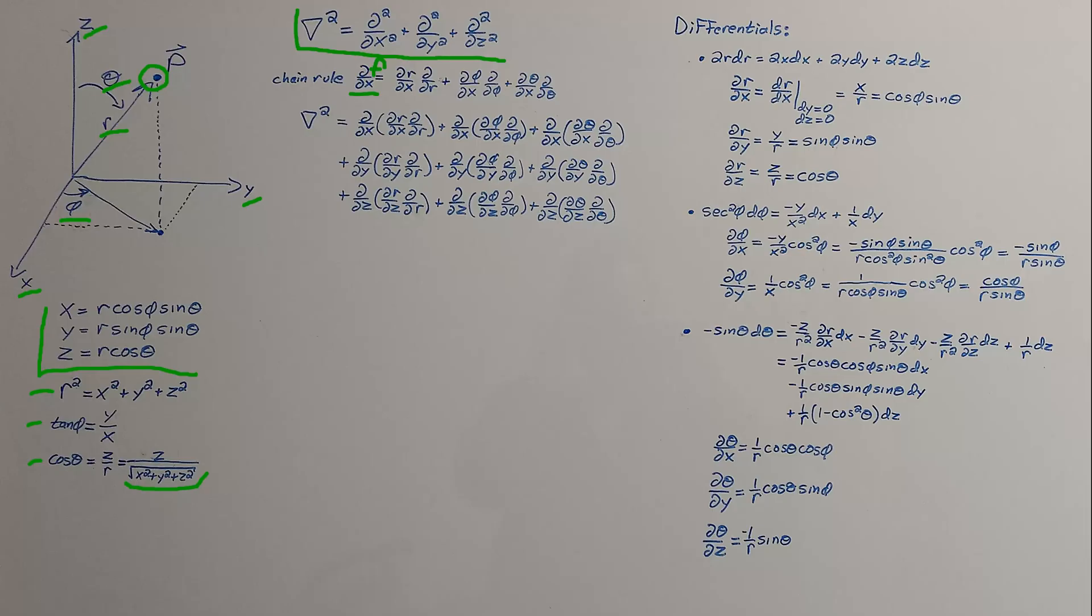Then by the chain rule, we're going to take the partial of our f with respect to r, and by the chain rule, multiply by partial of r with respect to x. Same thing for phi: we do partial of our function f with respect to phi, and by the chain rule, multiply by the partial of phi with respect to x. And the same pattern again for theta.